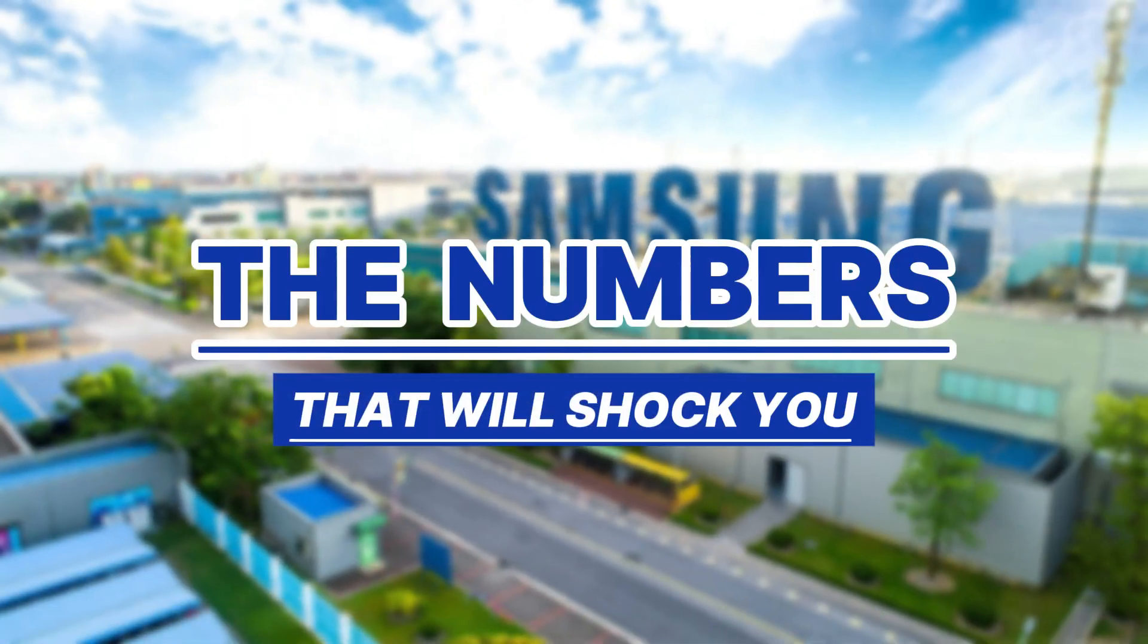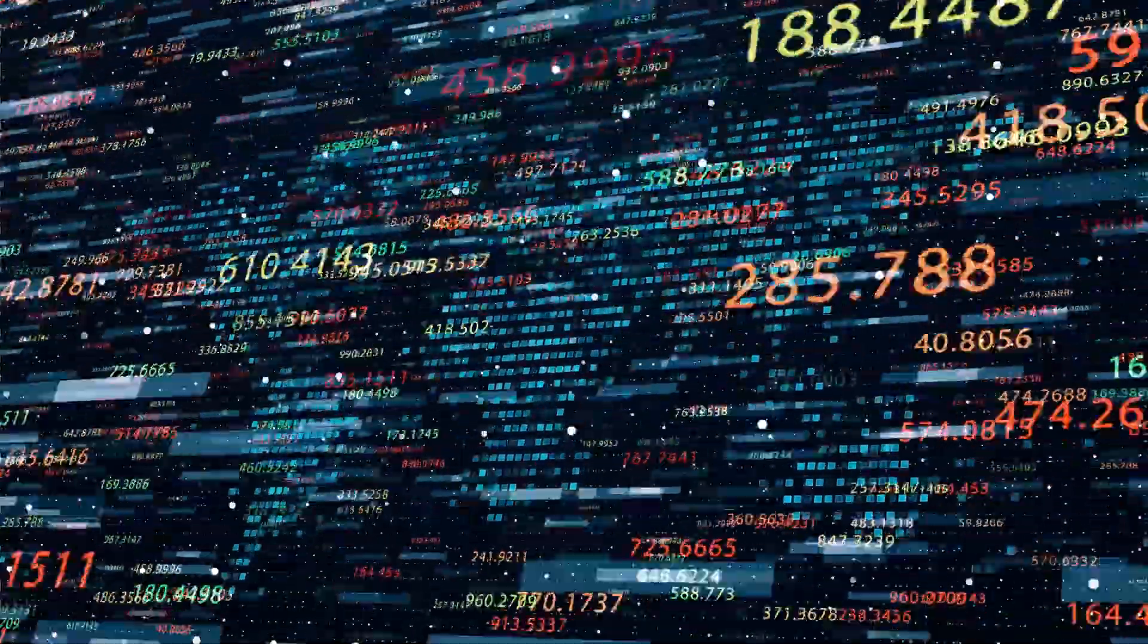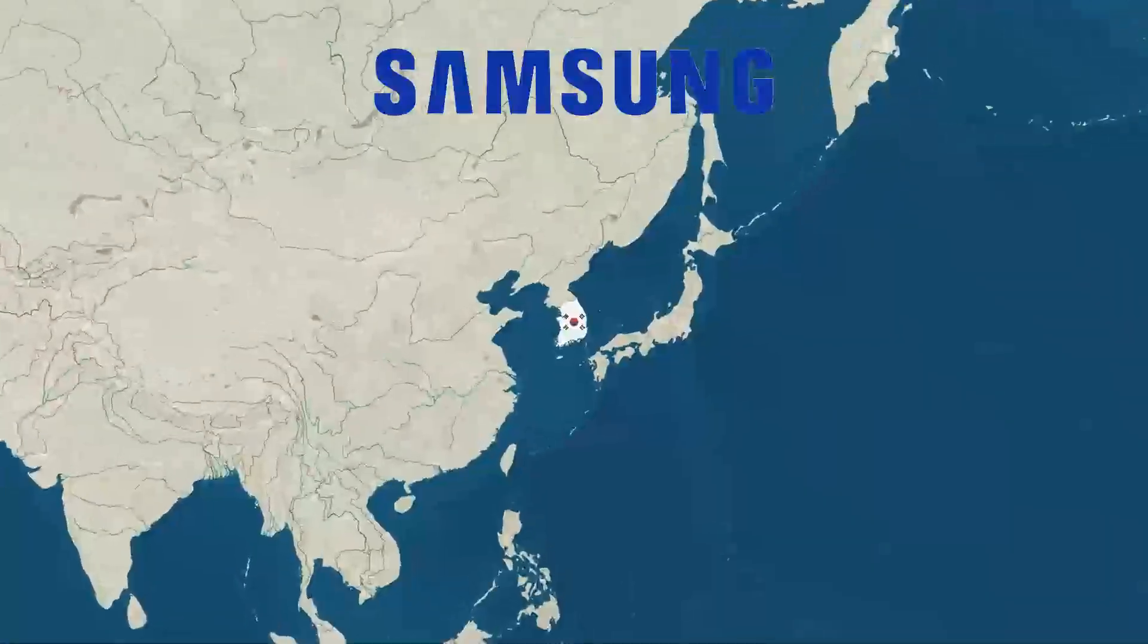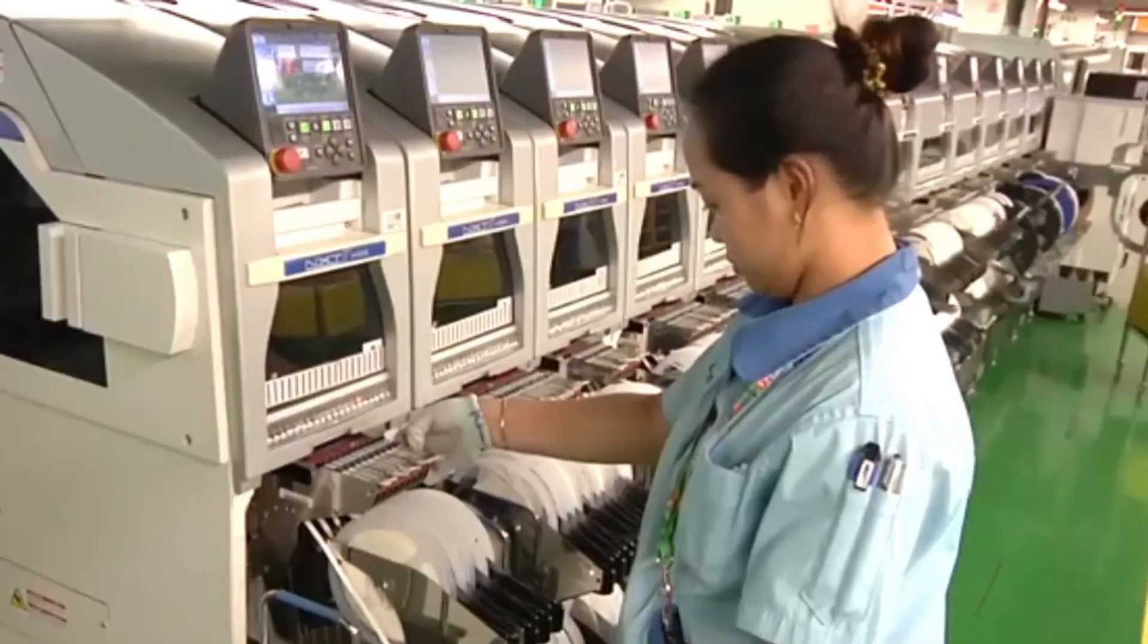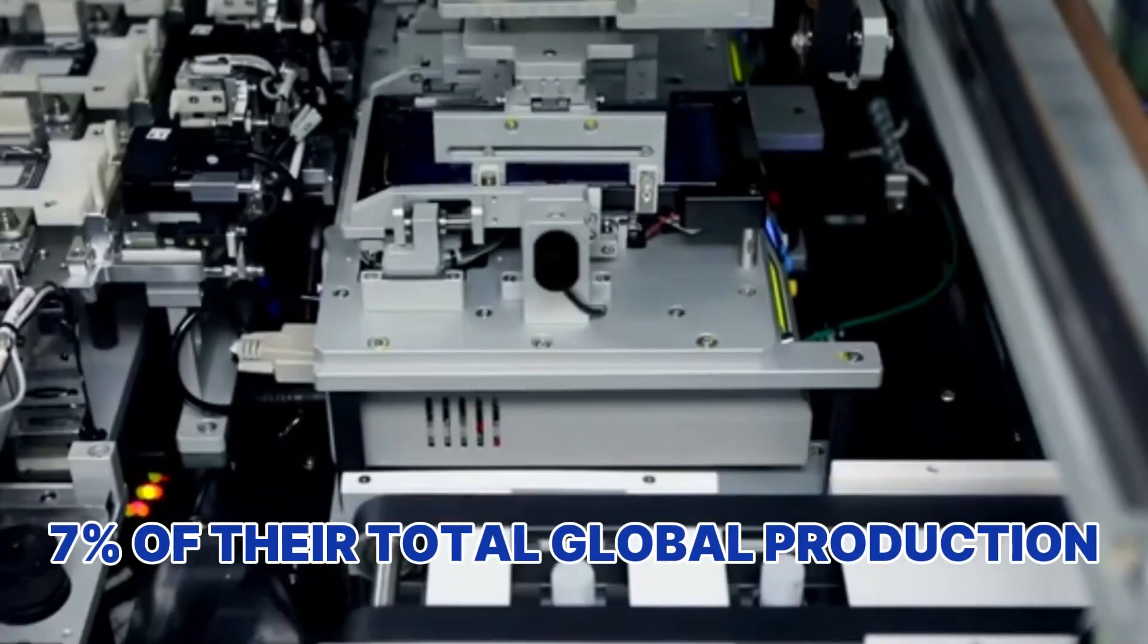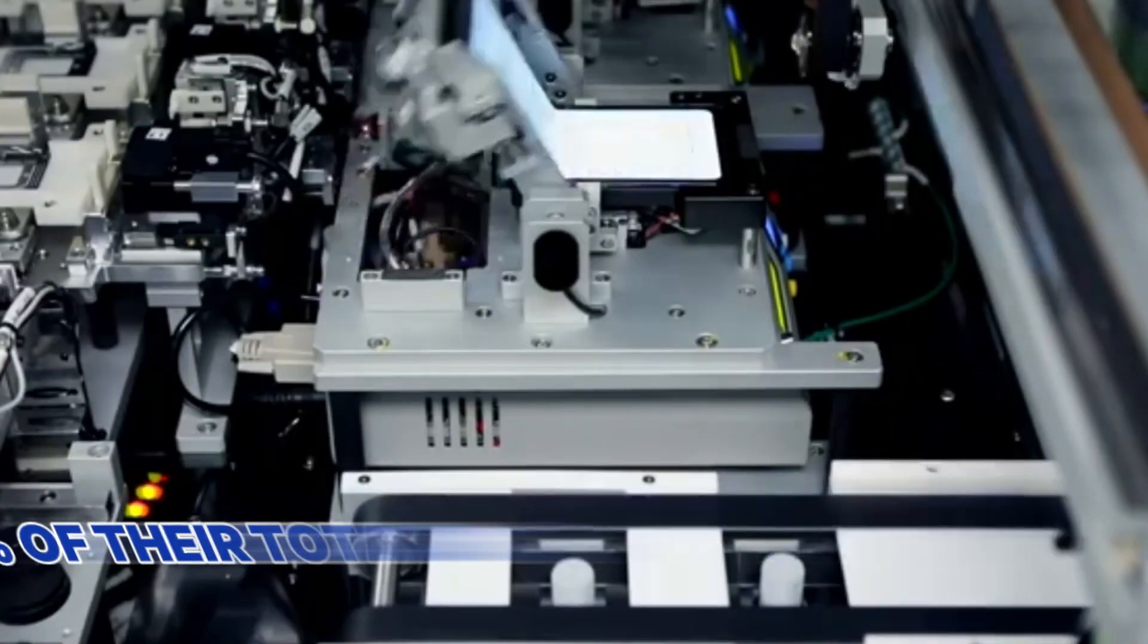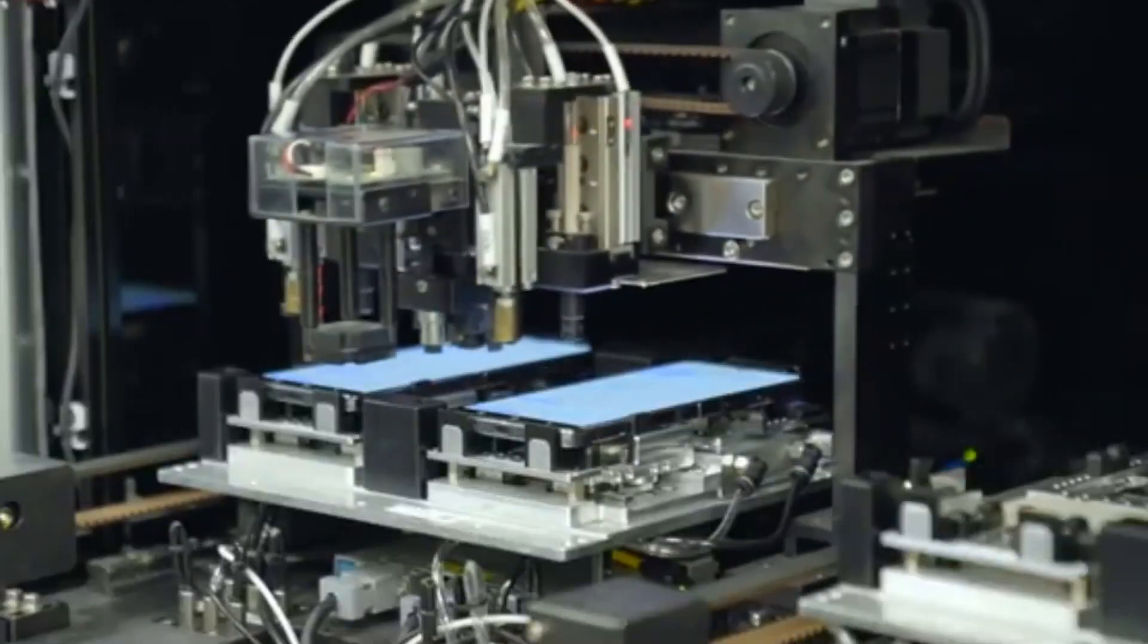Let me start with some numbers that sound absolutely insane. Samsung's main factory in South Korea, just one facility, cranks out 19 million phones every year. But that's just 7% of their total global production. We're talking about a company that has manufactured over 7 billion smartphones since they started. That's almost one phone for every person on Earth.